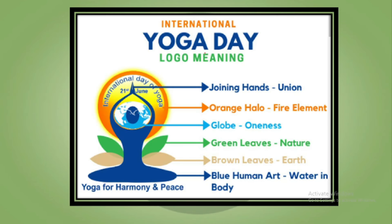Regarding the International Yoga Day logo: the joining hands depict union — between people, or between mind and body. The orange/halo color represents the element of Agni or fire. The yellow represents the sun. The globe represents global oneness — like Vasudhaiva Kutumbakam, the idea of a global village. The green leaves represent nature, the brown leaves represent the earth element, and the blue represents water.